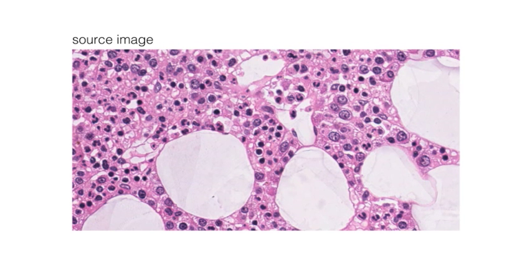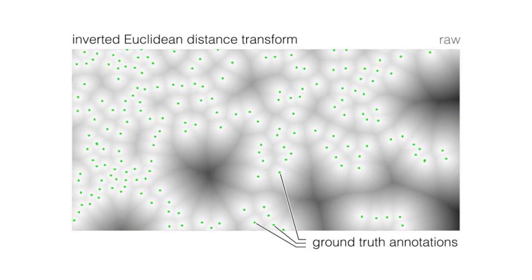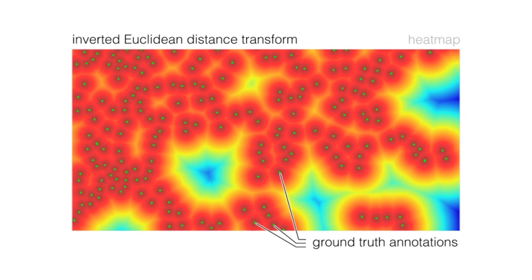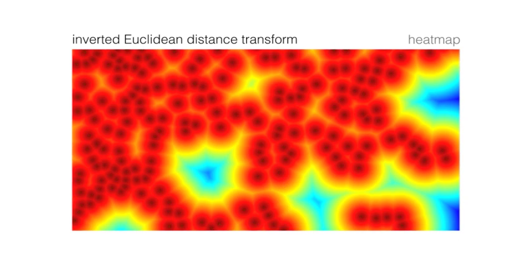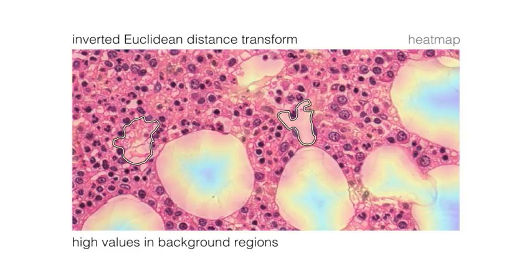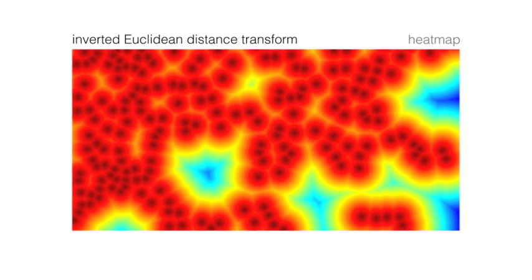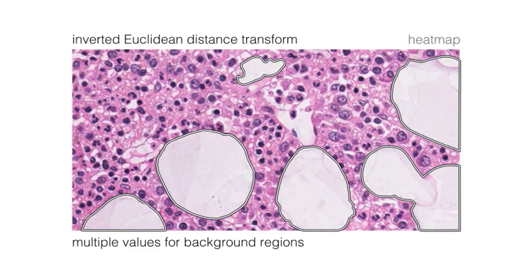Instead of a binary target function, we propose to use a continuous, non-linear target function based on the inverted Euclidean distance transform of the annotated cell centers. The Euclidean distance transform itself, however, produces high values even in background areas and thus the cell centers are not well defined. Moreover, it introduces ambiguity into learning the background appearance by defining multiple values for the same class.